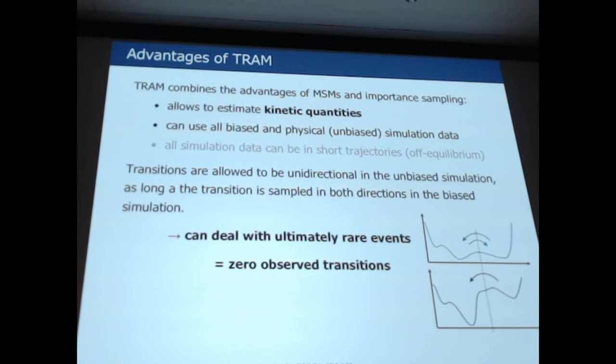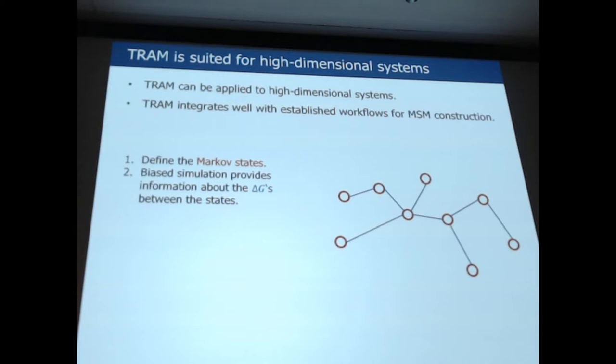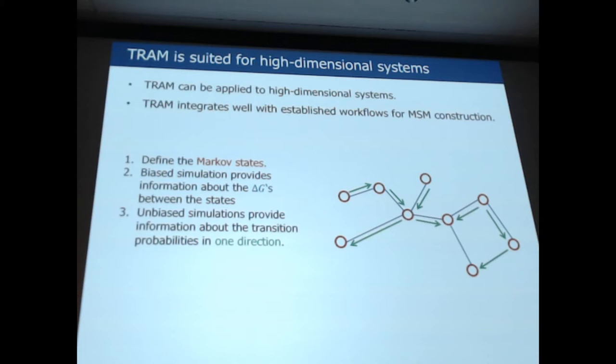Of course, this is all done in the context of an MSM, and it works for high dimensional spaces. It's not like it only works for a double well, or a system with two states, but it can work for an arbitrary number of states. And it fits well with the usual workflows that are used for Markov model construction. So the first step would be to define some Markov states. The next step, one has to run the free energy calculation, which gives the delta g's between the Markov states. Then a normal MD simulation, a conventional physical MD simulation, has to be run, which can give transition rates, but these transition rates only have to be unidirectional. You only need to sample paths that go one direction. And then, applying TRAM, the whole network is completed, and one gains a complete kinetic and complete free energy model of the system.